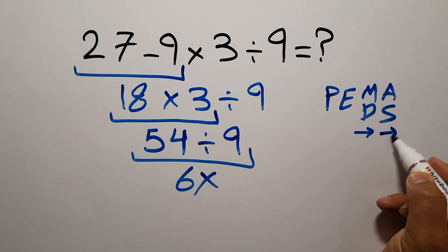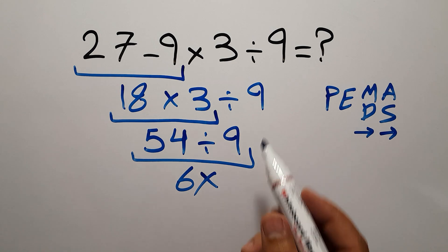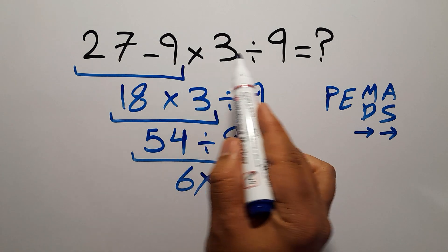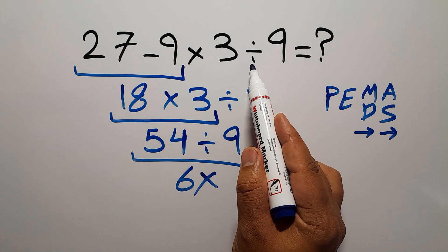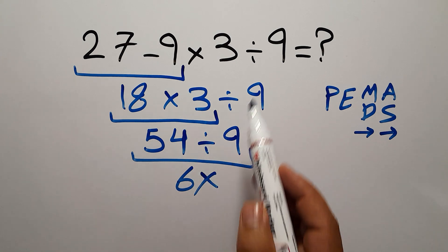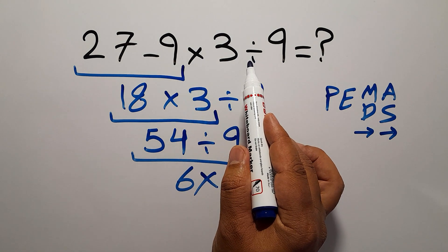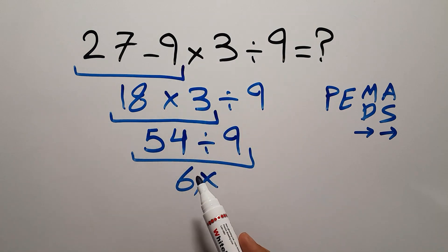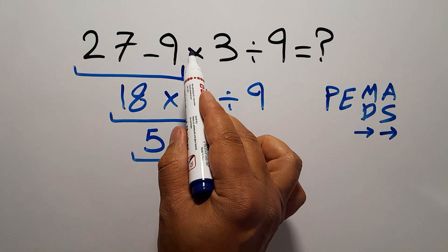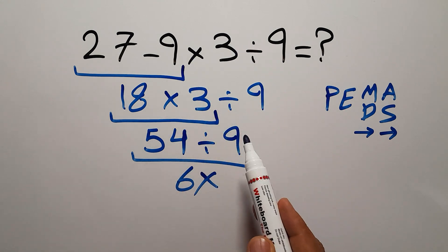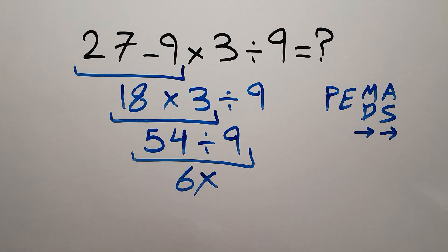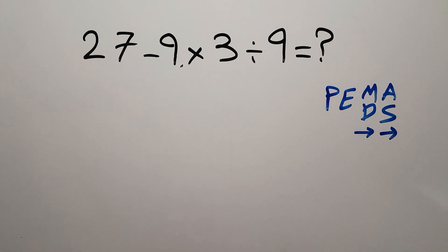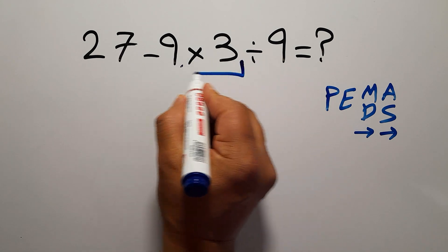Remember that multiplication and division have equal priority and we work from left to right, and the same applies to addition and subtraction. So here, we have to do multiplication first because multiplication and division have higher priority than subtraction. We work left to right, so first this multiplication, then this division, and finally this subtraction.